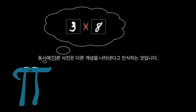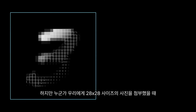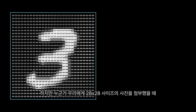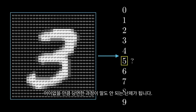While at the same time recognizing other images as their own distinct ideas. But if I told you, sit down and write for me a program that takes in a grid of 28 by 28 pixels like this, and outputs a single number between 0 and 10, telling you what it thinks the digit is — well, the task goes from comically trivial to dauntingly difficult.